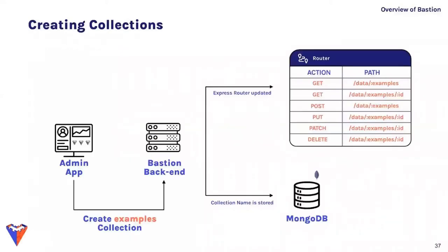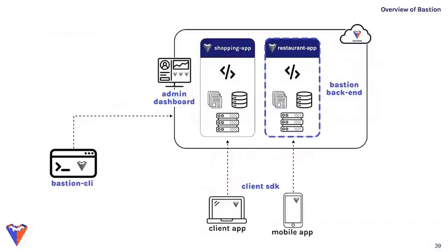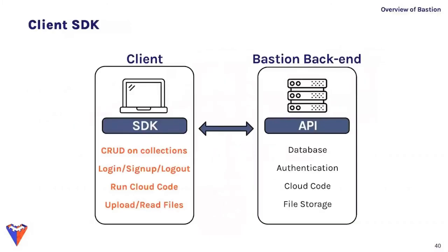The Bastion backend handles requests from both the admin application and front-end applications built with the Bastion SDK, providing authentication, execution of cloud code functions, file storage, and database operations. When a collection is created from the admin app, it's stored in the instance's database and API endpoints are dynamically created on the app server providing basic CRUD functionality. For file storage, files are uploaded to the app server, which uploads them to a dedicated S3 bucket; the S3 URL is stored in the database so read requests only return the URL rather than the entire file.